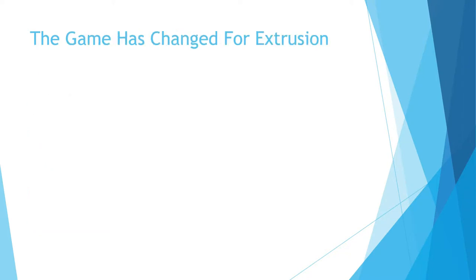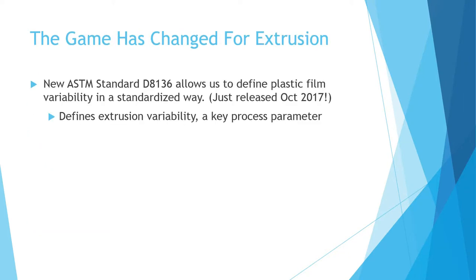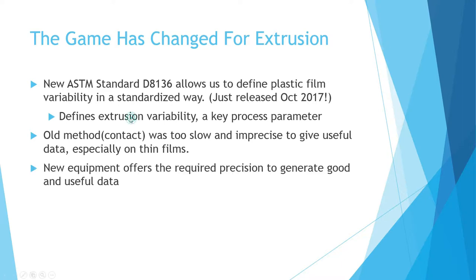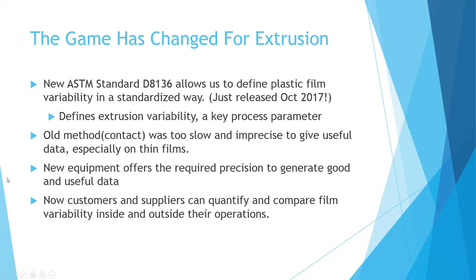The game has changed for plastic film extrusion because we have a new ASTM standard, D8136. This allows us to define plastic film variability in a standardized way, and this is a key process parameter and quality parameter. The old contact method was too slow and imprecise to give useful data, so people didn't really look at variability data much. The new equipment offers the required precision to generate good and useful data — because if you start with bad data, you're not going to get anywhere.